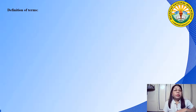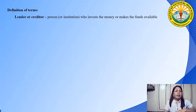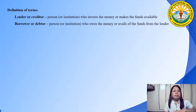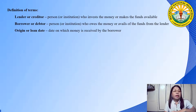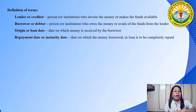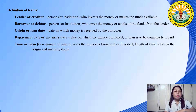Let us first study some terms related to our lesson. A lender or creditor is a person or institution who invests the money or makes the funds available. A borrower or debtor is a person or institution who owes the money or avails of the funds from the lender. The origin or loan date is the date on which money is received by the borrower. The repayment date or maturity date is the date on which the money borrowed or loan is to be completely repaid. Time or term is the amount of time in years the money is borrowed or invested — the length of time between the origin and maturity dates.